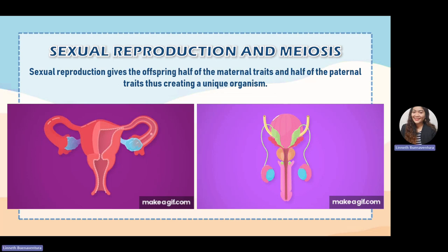The offspring or zygote contains unique genetic information — 50 percent from the mother and 50 percent from the father.